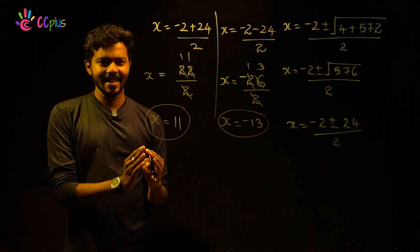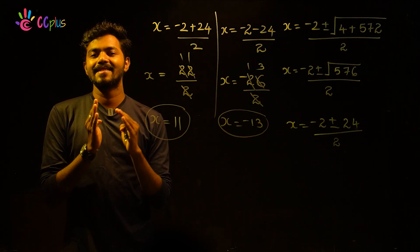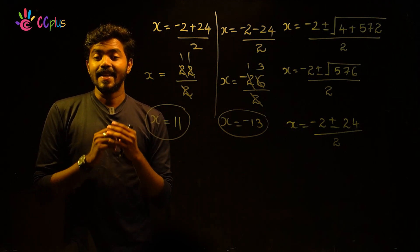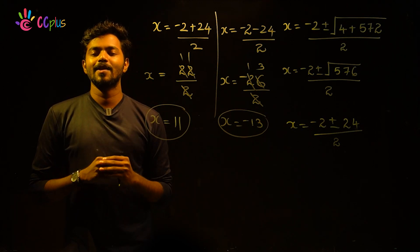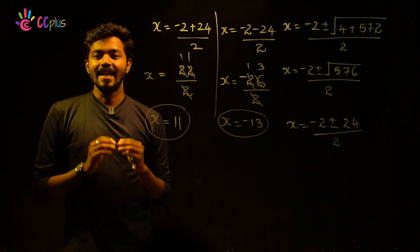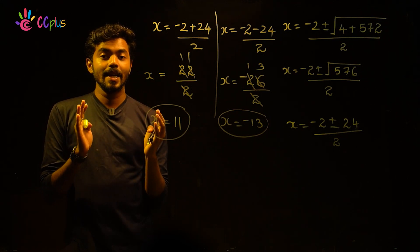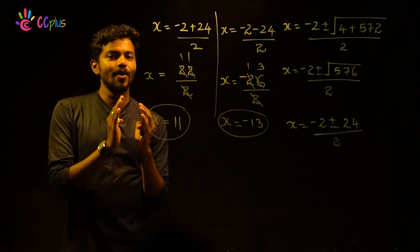We have x equals 11 and x equals minus 13. The question asked for two consecutive odd positive integers. So we take the positive value x equals 11.